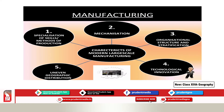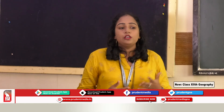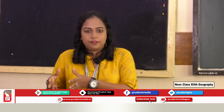Manufacturing has certain characteristic features. The first is specialization of skills or method of production. Factories produce only those items which are made to order. When large scale manufacturing is established, bulk of items are created, so specialization of labors and standardization of commodities come into picture. Some kind of training is required, and specialization always helps a person to focus on their particular activity of production.